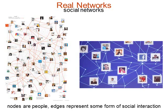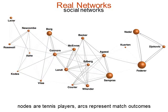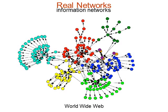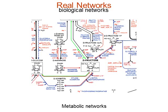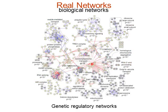There are also more unusual social networks — for instance, a tennis social network where each node is a tennis player, and two players are connected if they played a match against each other. You also have information networks like the World Wide Web, citation networks between scientists, and biological networks like neural networks. It's a very general approach.